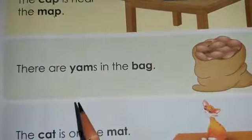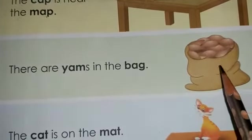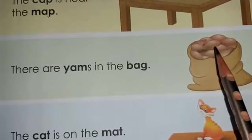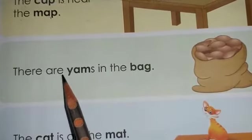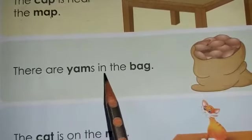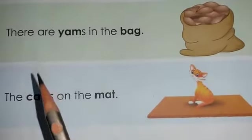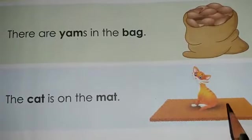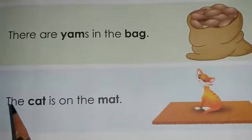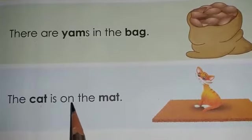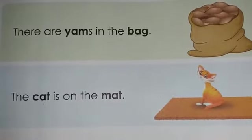Now let's come up to the next one. What do you see? There is a bag. And what is there inside the bag? Lots of yams. So the sentence is: there are yams in the bag. Now, come up to the next one. What do you see? There is a mat and who is sitting on the mat? A cat. So, the cat is on the mat. Clear to you, students? So this is what is given on page number 27.